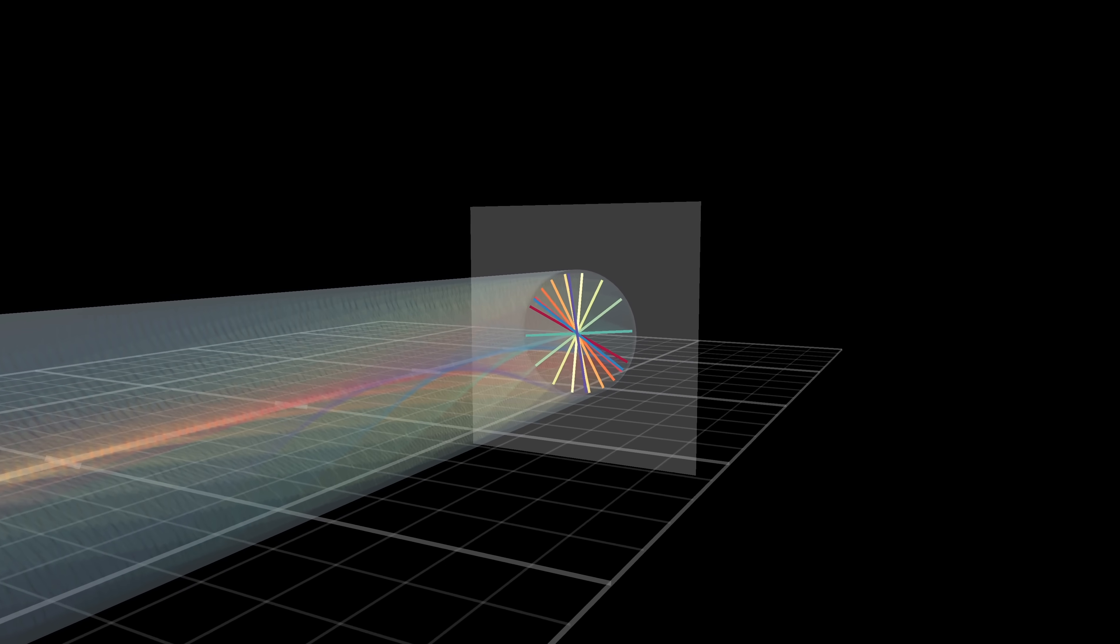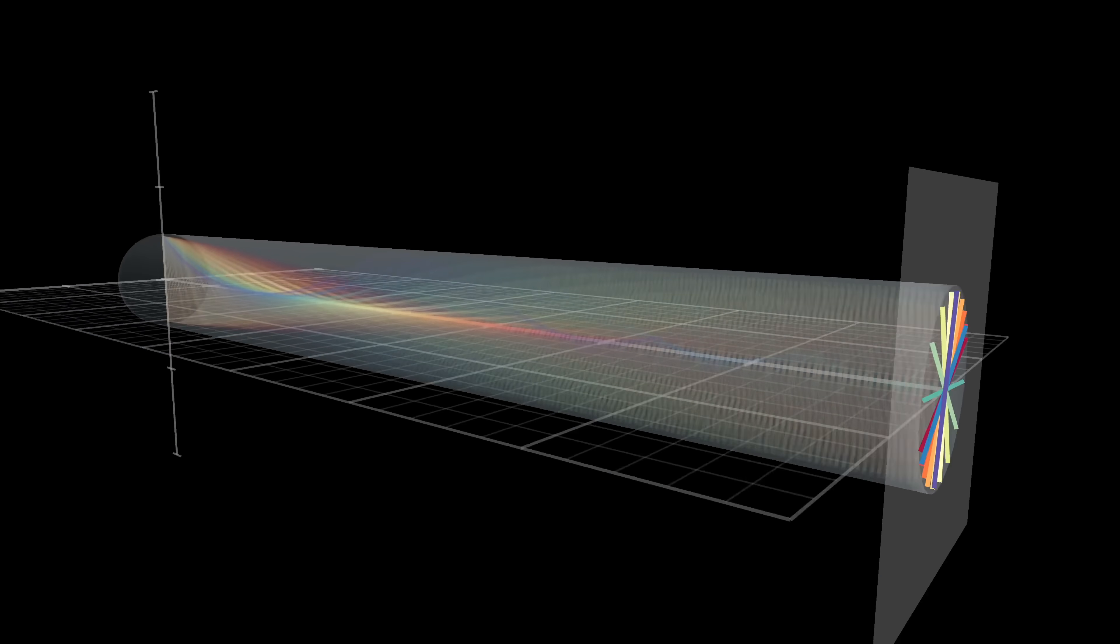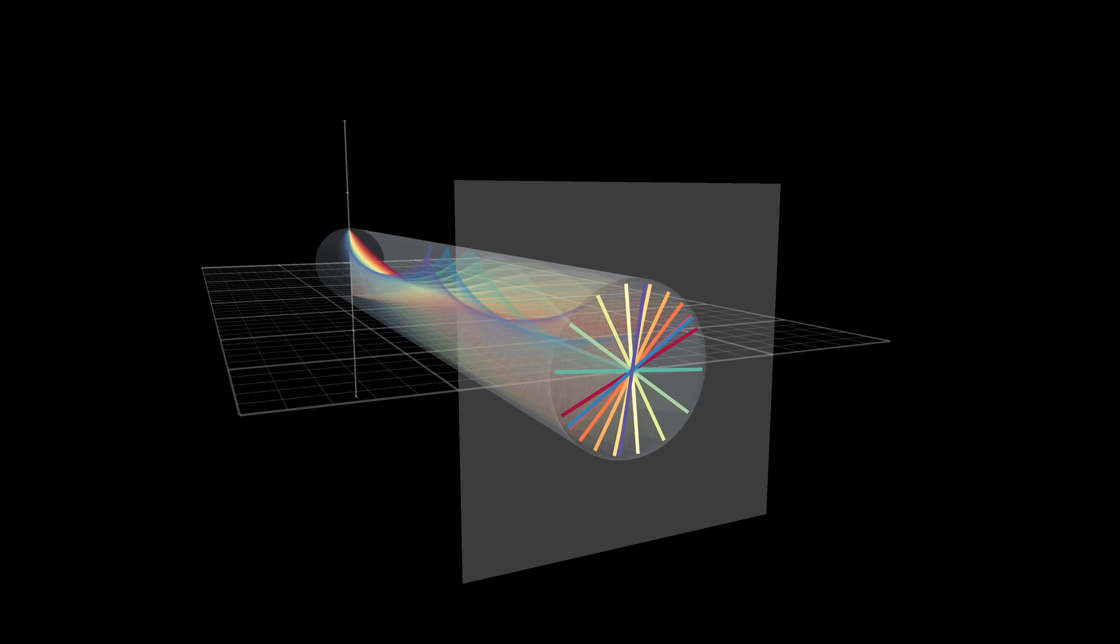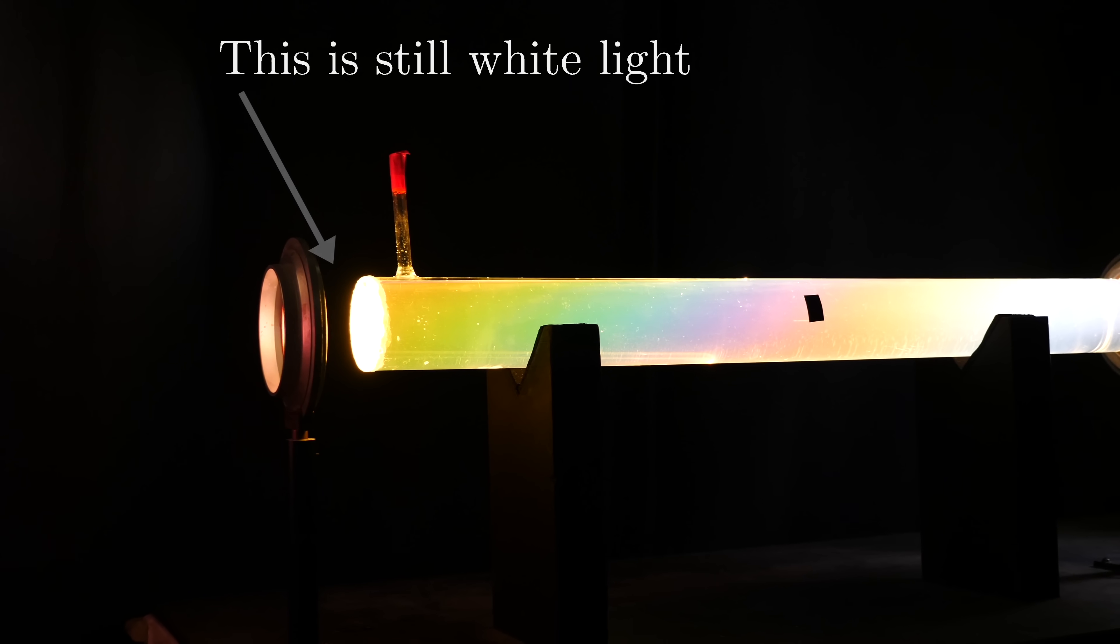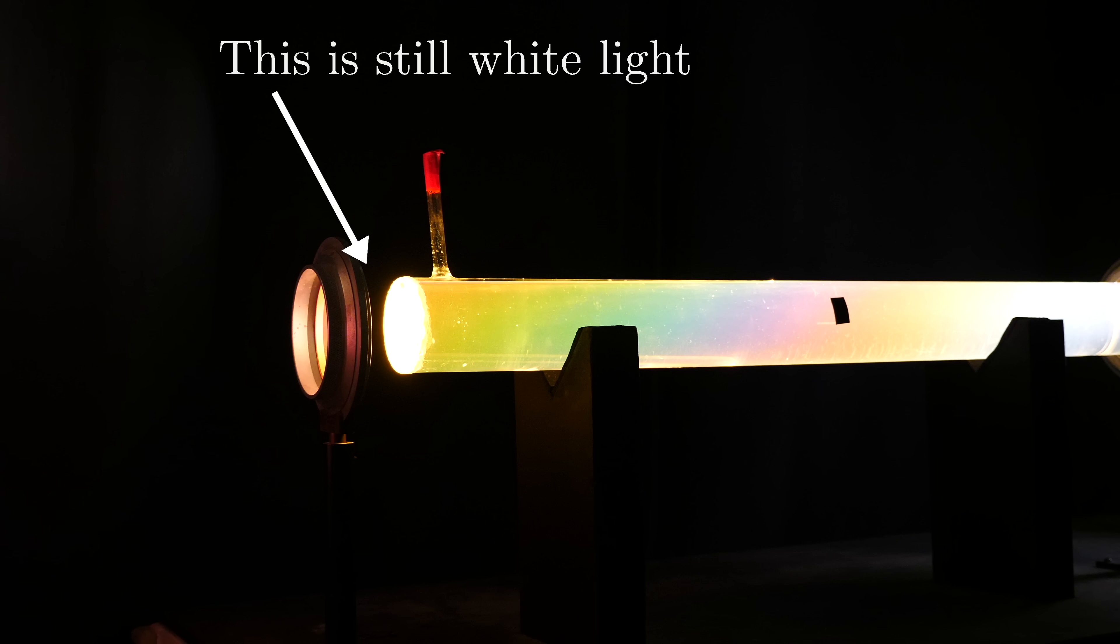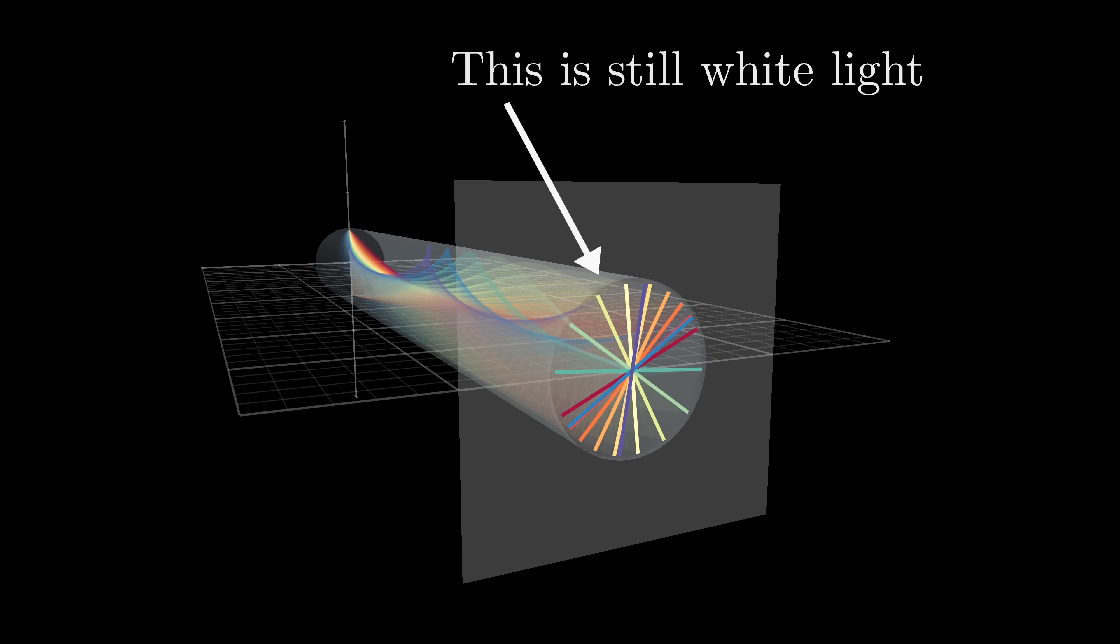For example, by the time you reach the end of the tube, they all have their own distinct wiggling directions. But one thing that's important to understand is that this is still white light. If you were to put your eye at the end of the tube and look towards the lamp, it wouldn't look colored in any way, because even if the wiggling directions are all different, there's still the same amount of each color as there was at the start.